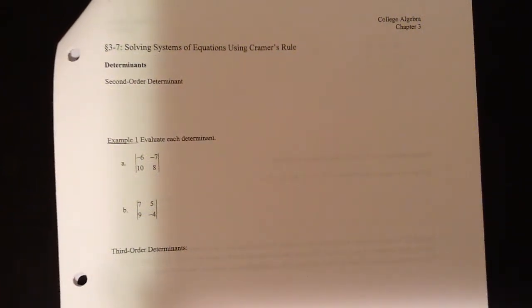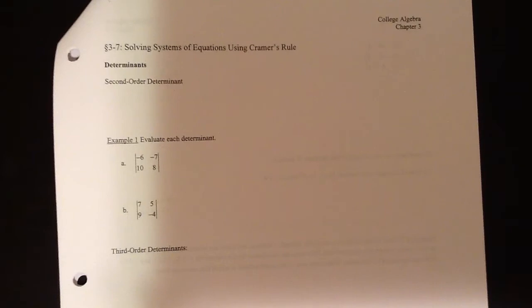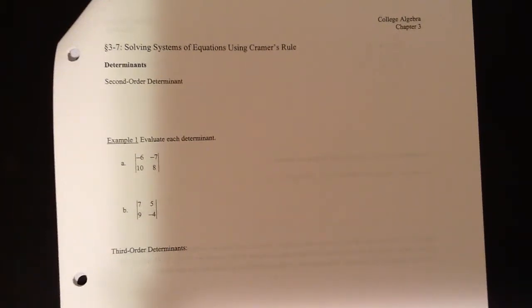The next thing we're going to be talking about in the general topic of matrices is something called determinants, and then using these determinants to solve systems of equations using something called Cramer's Rule. We've done a lot of different things at this point to solve systems of equations — graphing, elimination, substitution — and now we are coming to our last method of the chapter. In order to use Cramer's Rule, we have to introduce determinants.